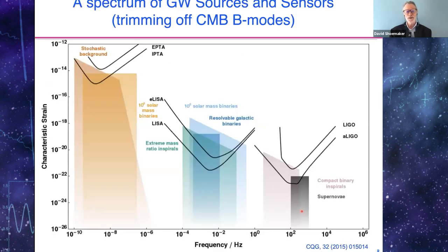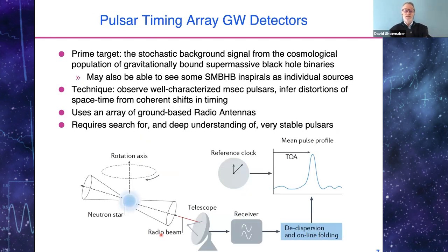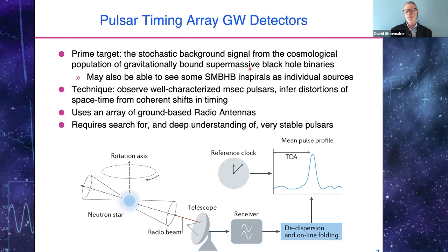Moving up in frequency, I have another plot of strain versus frequency — trimmed to exclude the CMB — covering the range from about 10⁻¹⁰ to 10⁻⁶ Hz, where we'll talk about pulsar timing arrays. The prime target is a stochastic background signal from cosmological sources. It's very unlikely that a primordial background would dominate over an astrophysical background in this frequency range. It may also be possible to see some supermassive black hole binary inspirals as individual sources, which will require some luck.